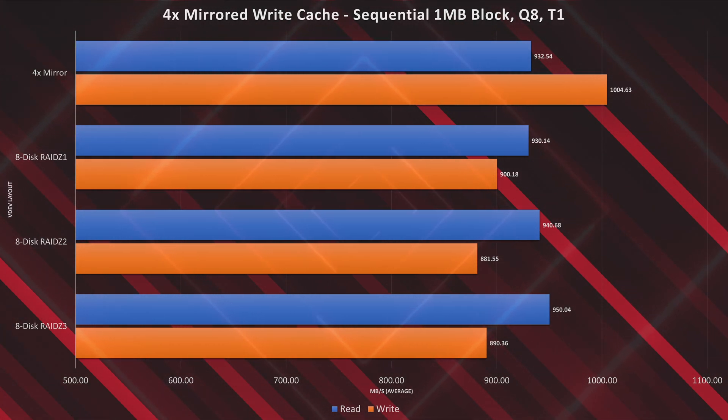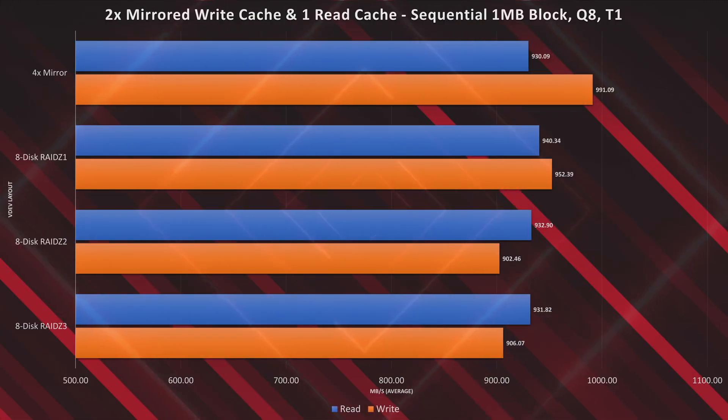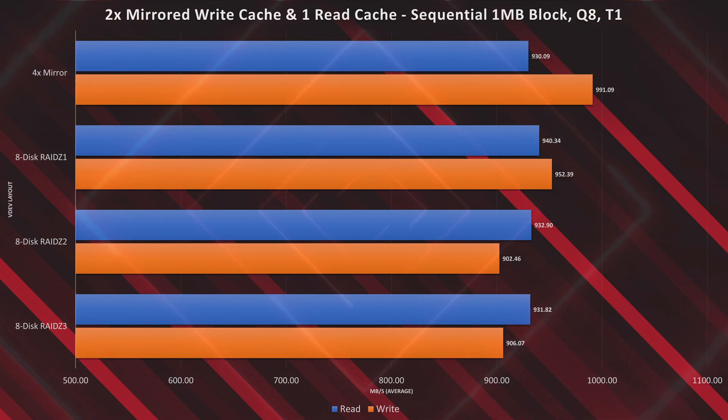Now with the addition of both a read cache and write cache to our Data VDevs, we essentially see the same results as we saw with the write cache only — all numbers are basically within the same margin of error throughout all tests. Those numbers are basically all the same regardless of layout or whether they have read or write caches, and that just doesn't make any sense to me. I would expect that when you add caches we'd see some performance improvements. Clearly I don't fully grasp what's going on here, so it's time to get a hold of an expert.